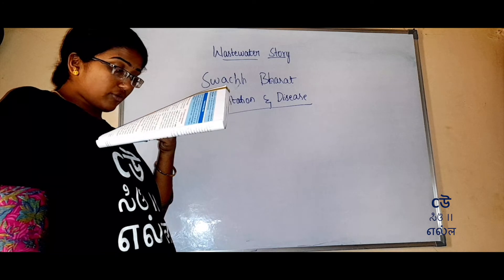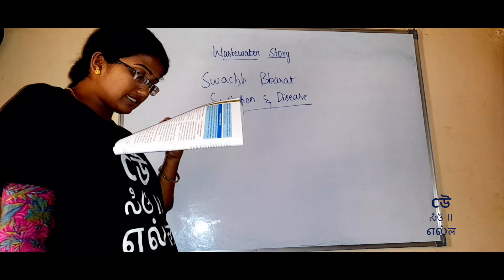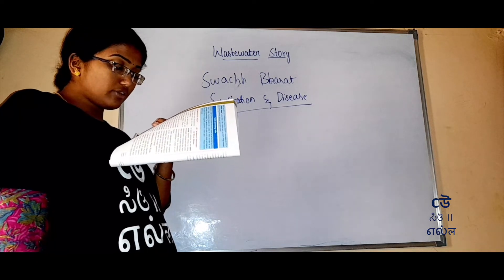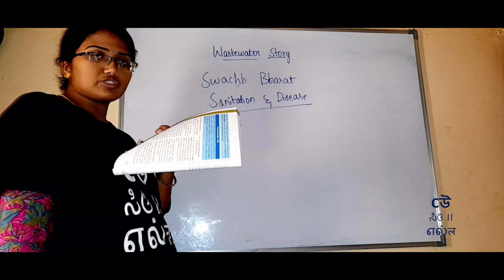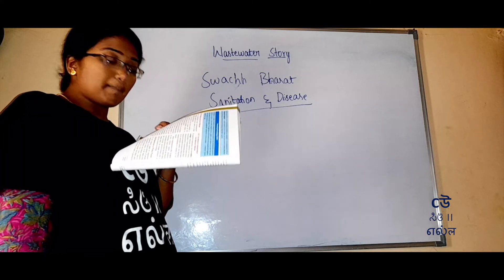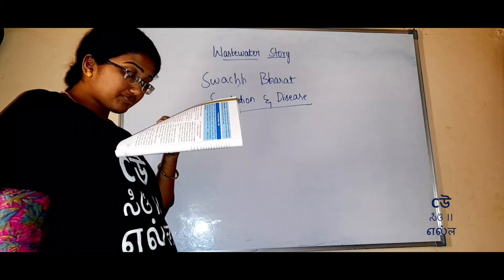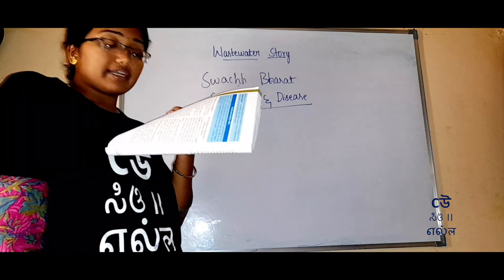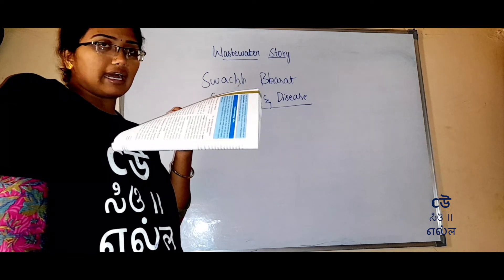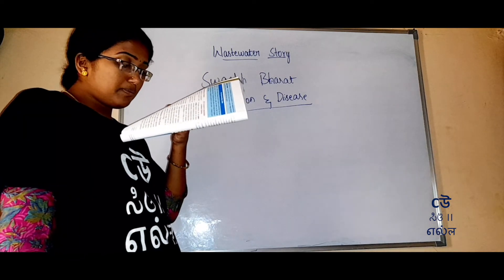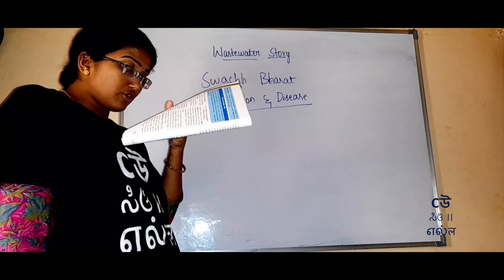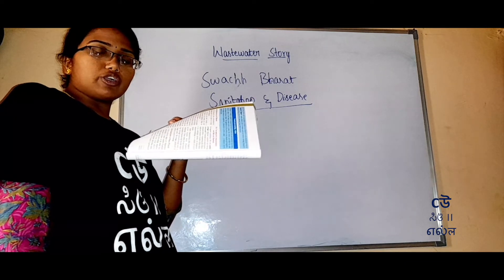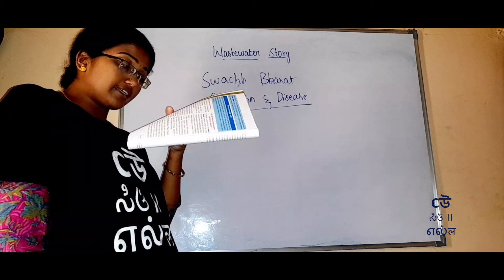Underground water is a source of water for wells, tube wells, springs, and many rivers, as you learnt in chapter 16. The groundwater is the main water source. It becomes the most common route for waterborne diseases.